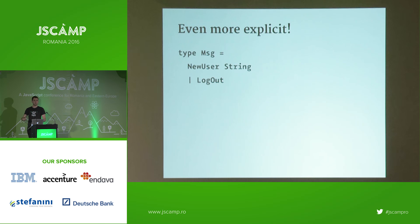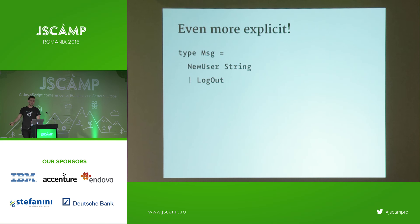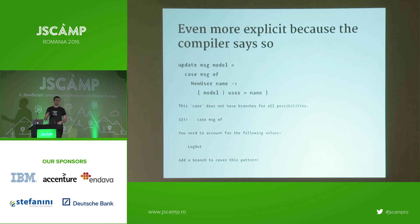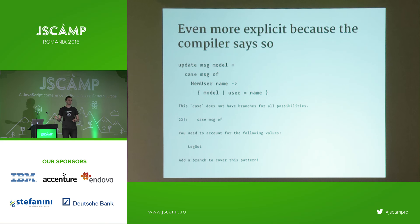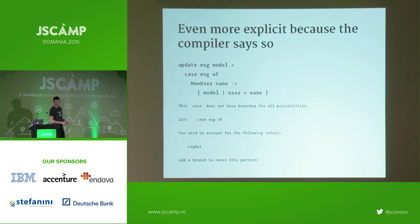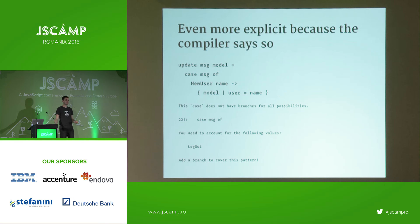In Elm, we can get even more explicit by modeling these actions as types. We define a message type that lists all possible messages a user could create — like 'NewUser' with a name string, or 'Logout'. In the update function we have a case statement like a switch, but the compiler spots when the case isn't exhaustive — when you haven't dealt with every possible message. It will tell you 'you need to account for the following values: Logout.' This is one of the things that really drew me to Elm.